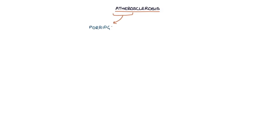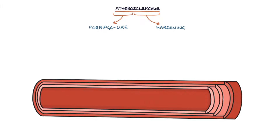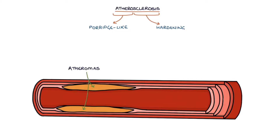Let's talk about atherosclerosis. 'Athero' refers to soft or porridge-like and 'sclerosis' refers to hardening. Atherosclerosis is a combination of atheromas, which are fatty deposits in the artery walls, and sclerosis, which is the process of hardening or stiffening of the blood vessel walls.